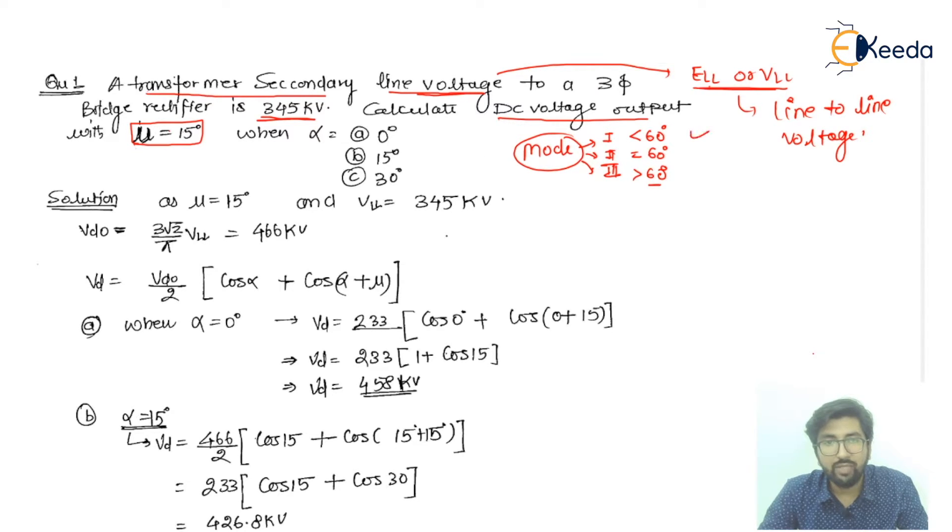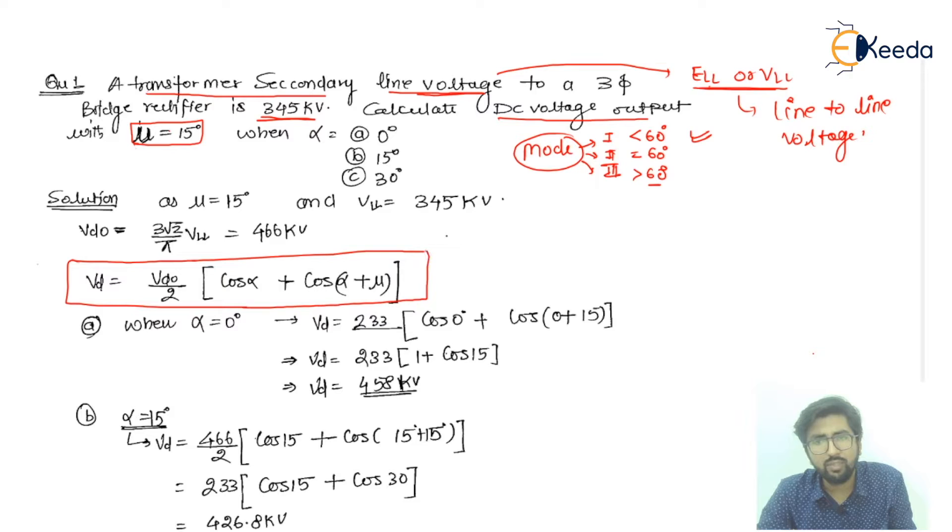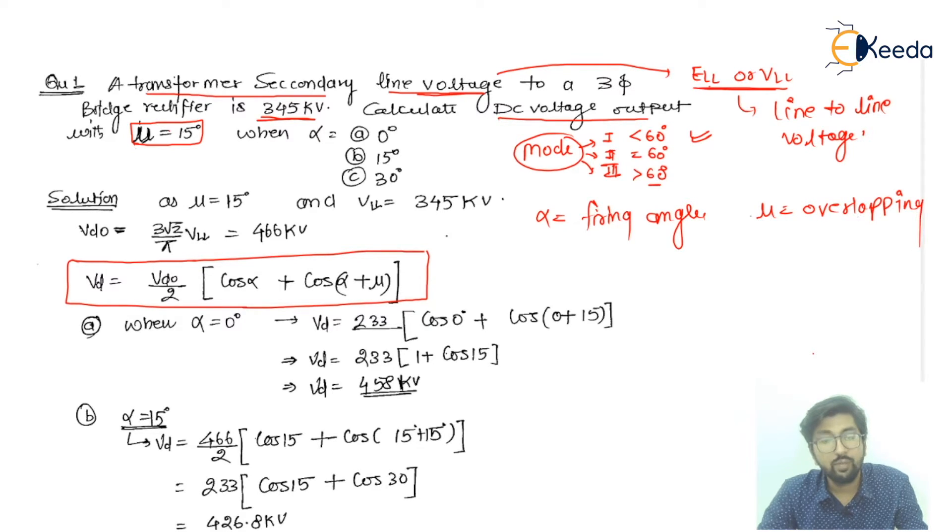So it is lying in mode number one. If it is lying in mode number one, then we will have the formula like this: VD is equal to VD0 by 2, cos alpha plus cos(alpha plus mu), where alpha is your firing angle and mu is your overlapping.